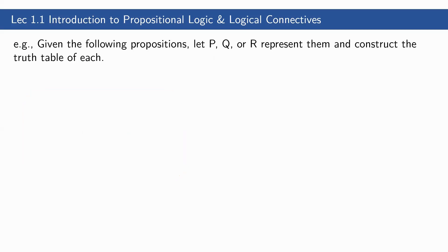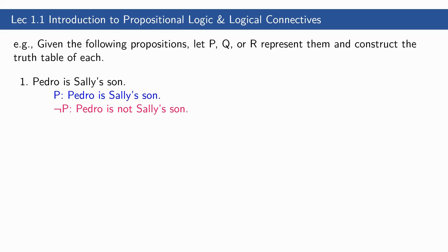Example for negation — given the following propositions, let P, Q, and R represent them and construct the truth table of each. First, P: 'Pedro is Sally's son.' The negation, not P: 'Pedro is not Sally's son' — we simply add 'not' after the verb. The truth table shows true/false and false/true as combinations. This is arbitrary because we do not know who Pedro is, but one of the two truth combinations will apply.